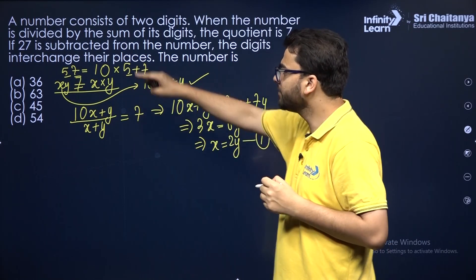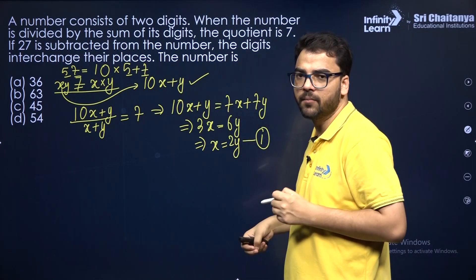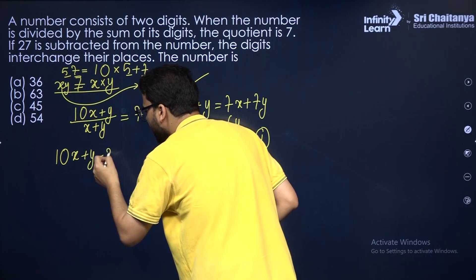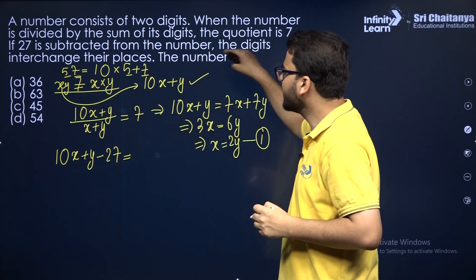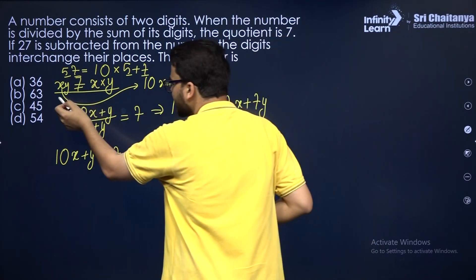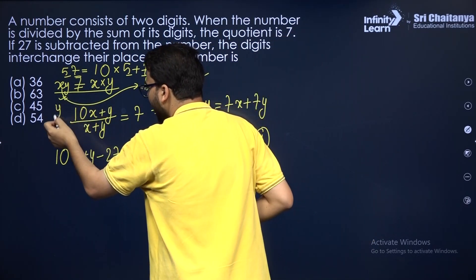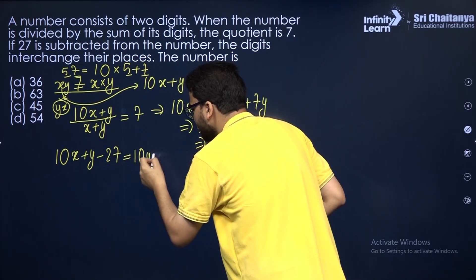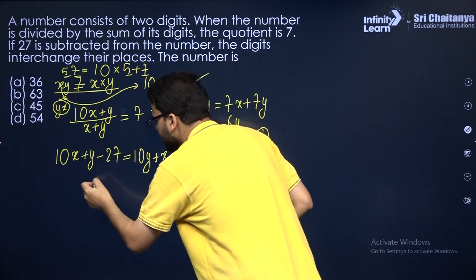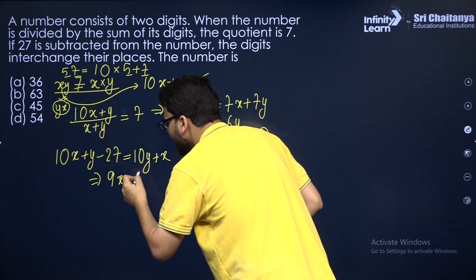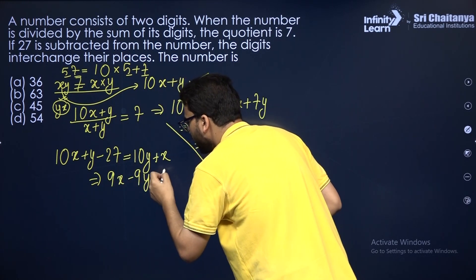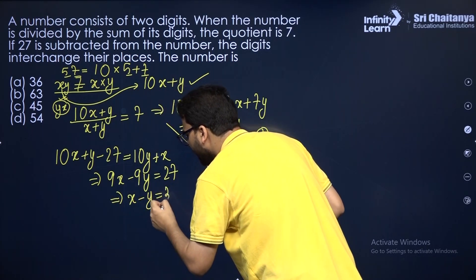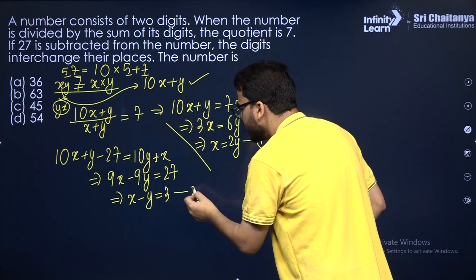For the second condition: if 27 is subtracted from the number, the digits interchange their places. So 10x plus y minus 27 equals the new number 10y plus x, where the digits have swapped. Simplifying: 9x minus 9y equals 27. Dividing both sides by 9 gives x minus y equals 3. This is the second linear equation.